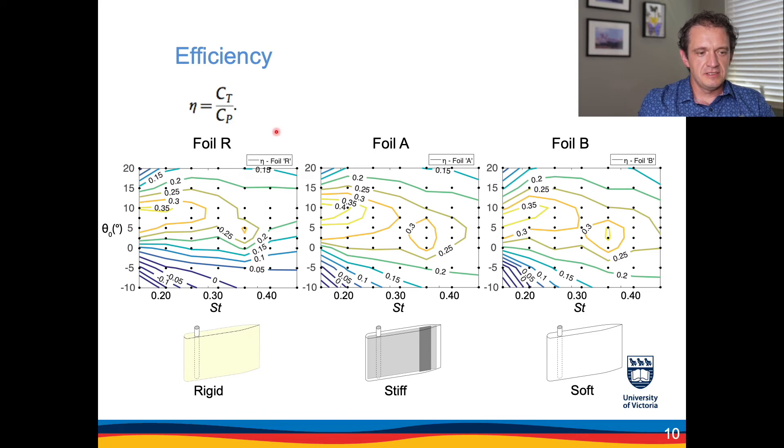If we consider the propulsive efficiency which we define here as the ratio of the thrust coefficient and the input power coefficient, we can see that the efficiency is substantially higher for both flexible foils, both in terms of the peak values of efficiency and also the ranges of parameters that correspond to higher efficiency values. So that is significant for practical applications.